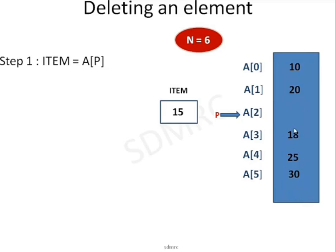Now I can shift these 3 values upwards. a[2] gets the value of a[3], a[3] gets the value of a[4], and a[4] gets the value of a[5]. If I start the value of i from p, it can go only up to n minus 2, because there is no further element beyond that. So i can be 2, 3, or 4 — incrementing. So i goes from p to n minus 2.